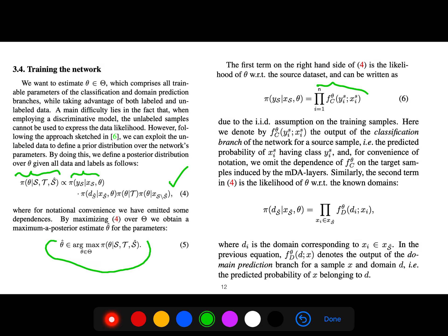So the first term here is the likelihood of theta that we can model because it's i.i.d. of the training samples. So we denote by F_C the output of classification branch of network for a source sample, the predicted probability having class y_i. So similarly, the next term is probability of d_s. So we just use the likelihood again, multiply all of these, and this time d_i is the domain corresponding to x_i.